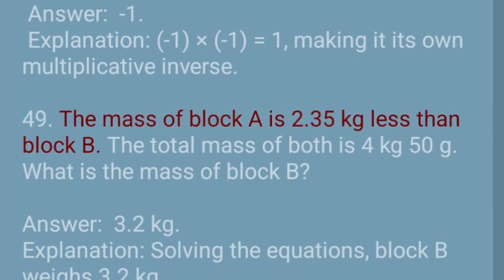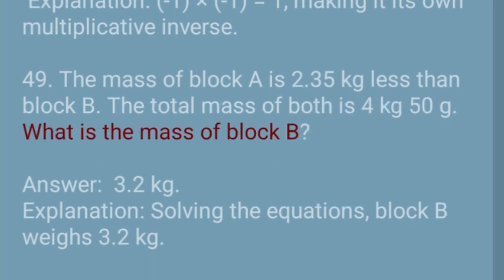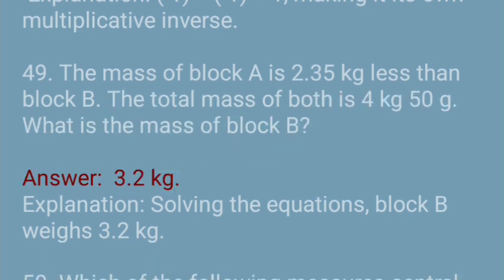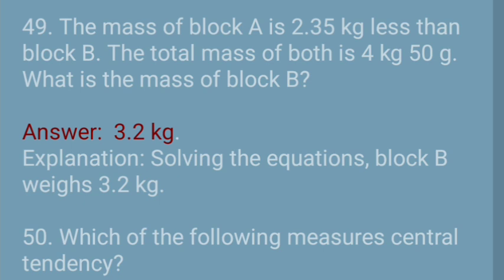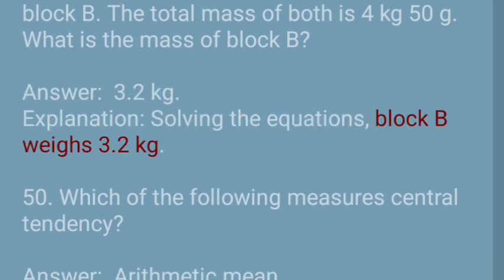Question 49: The mass of block A is 2.35 kilograms less than block B. The total mass of both is 4 kilograms 50 grams. What is the mass of block B? Answer: 3.2 kg. Explanation: Solving the equations, block B weighs 3.2 kg.